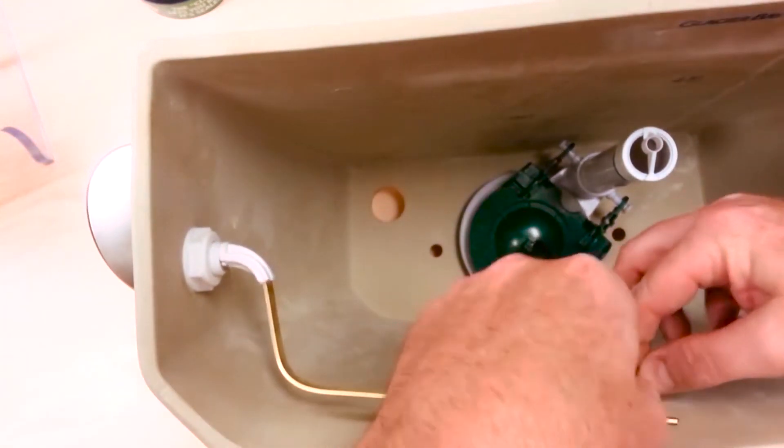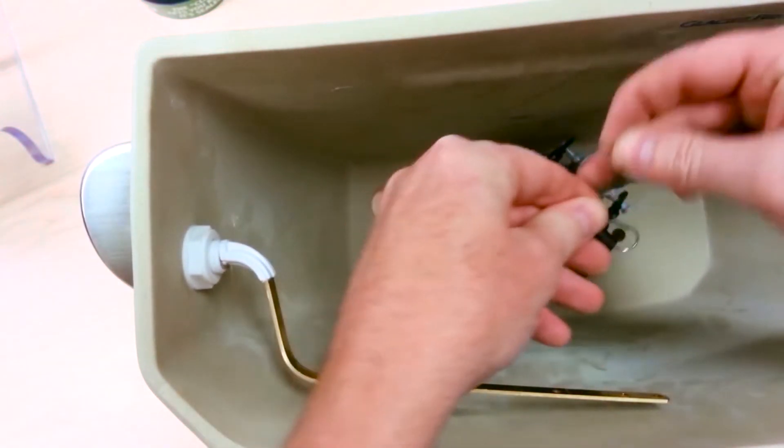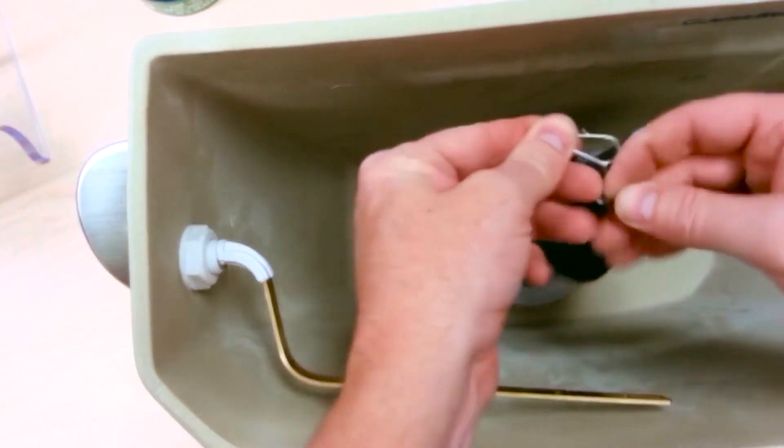When you do lift this up you want to make sure that the flapper lifts up, so we'll need to remove some of the slack in the chain because there's too much. Just remove the clip and move it say a half an inch or so down the flapper chain.